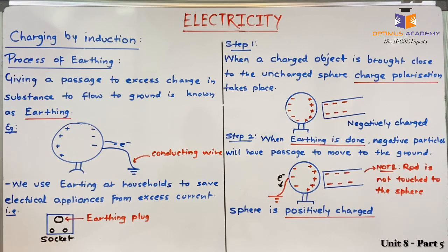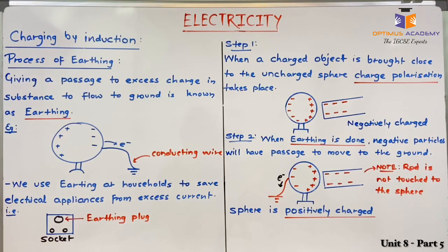Why do we have to connect electrical appliances to earth? The answer is that earth acts as a reservoir of charges. Earth can accommodate a lot of electrical charges within itself, and whenever necessary it can give those charges back to substances.